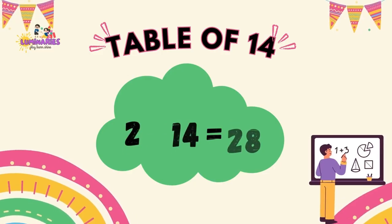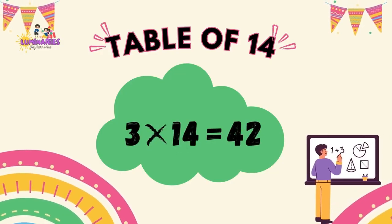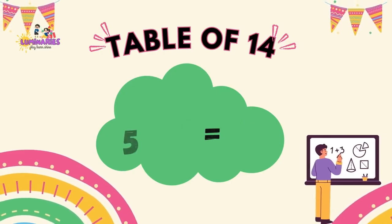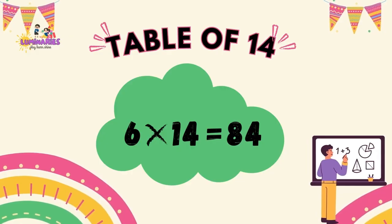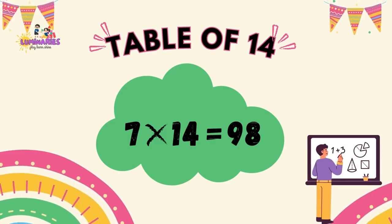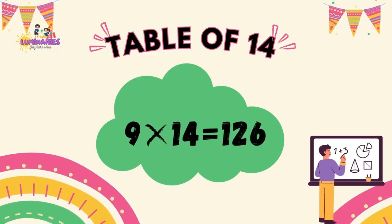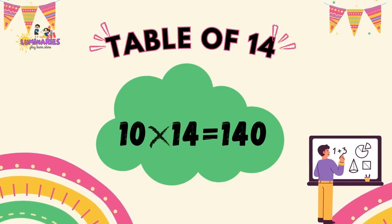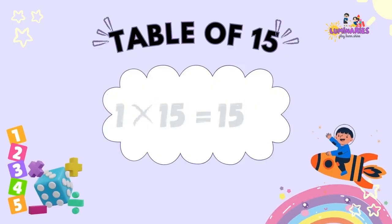Table of 14. 1 x 14 is 14. 2 x 14 is 28. 3 x 14 is 42. 4 x 14 is 56. 5 x 14 is 70. 6 x 14 is 84. 7 x 14 is 98. 8 x 14 is 112. 9 x 14 is 126. 10 x 14 is 140.